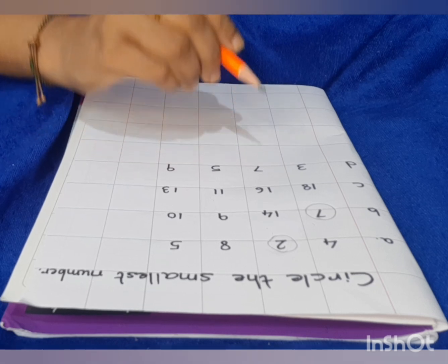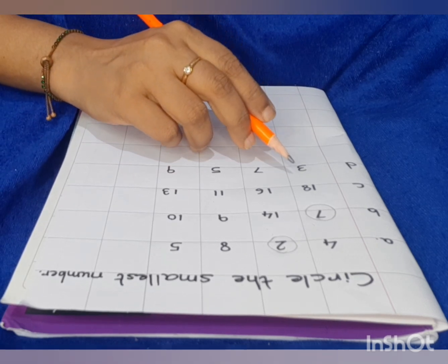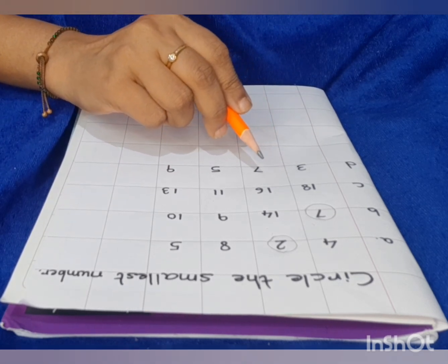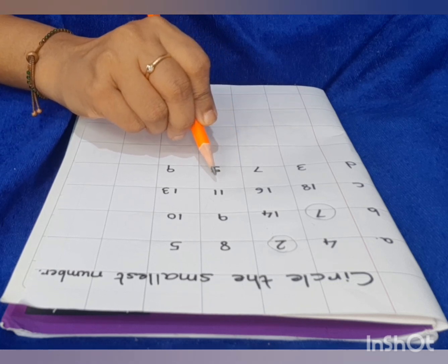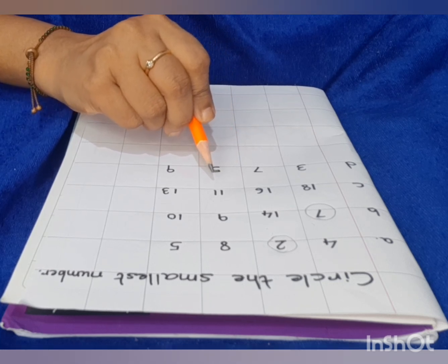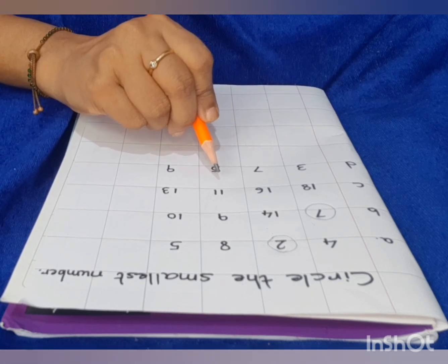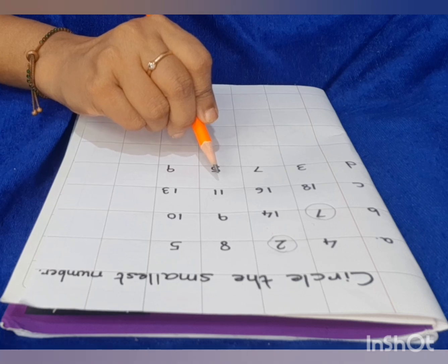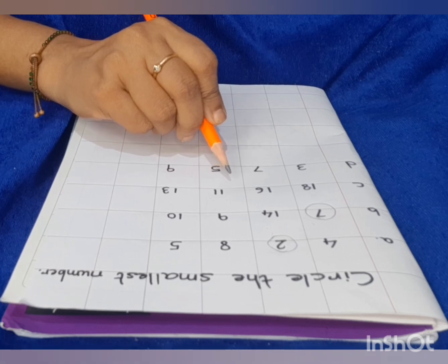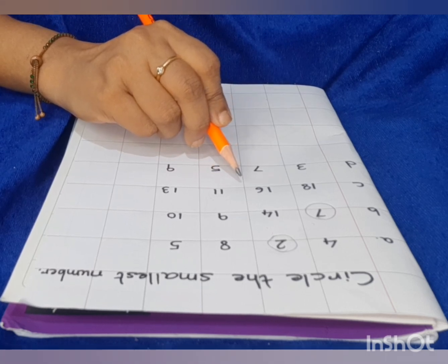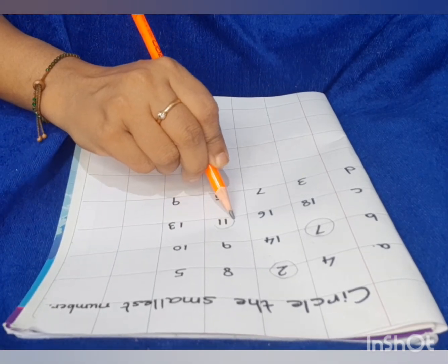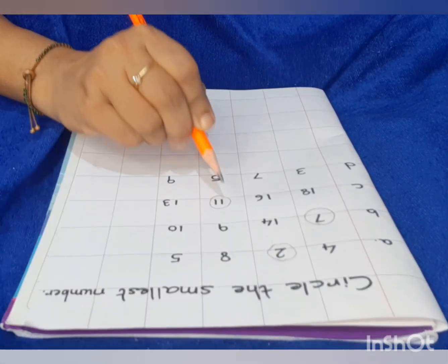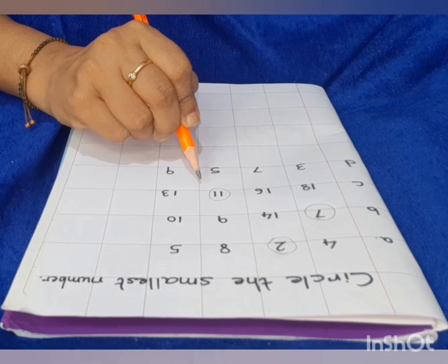Next. Is 1 there? No. 2? No. 3? No. 4? No. 5? No. 6? No. 7? No. 8? No. Is 9 there? No. Is 10 there? No. Is 11 there? Yes. Make a circle on 11. 11 is the smallest number.